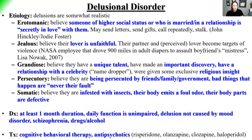Delusional disorder: patients must have somewhat realistic delusions for at least one month, but daily function is unimpaired. The delusion is not caused by a mood disorder, schizophrenia, or drug/alcohol use. There are five main types. Erotomanic: the patient believes someone of higher social status or an unavailable person is secretly in love with them — they may send letters, gifts, call repeatedly, or stalk that person. John Hinckley's attempted assassination of President Reagan is a classic example.